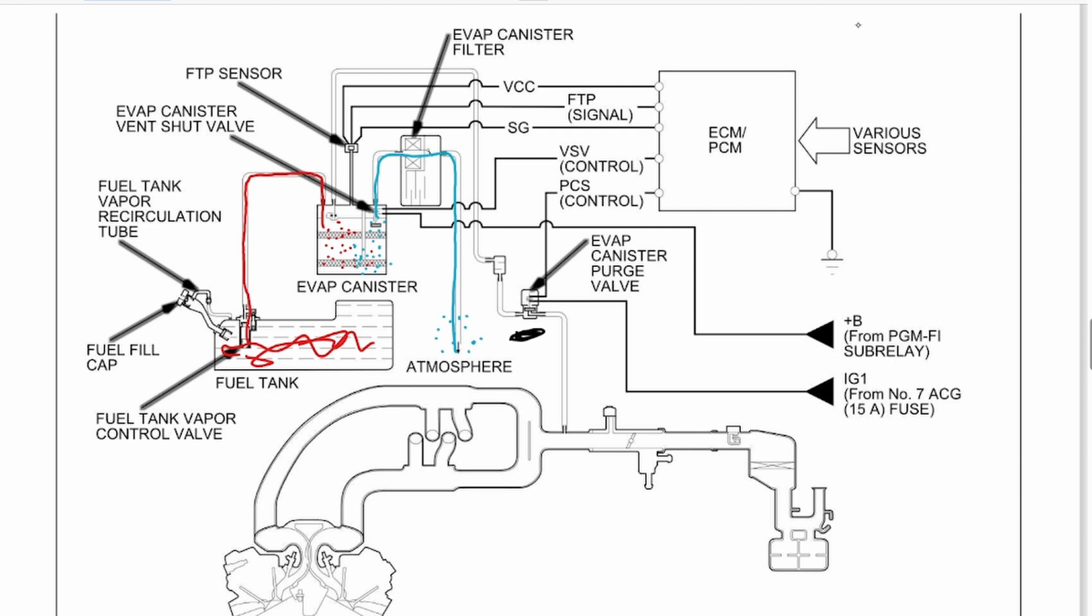Right here is the purge valve. When the purge is open, those hydrocarbons are drawn into the intake manifold, into the engine to be burned up. That intake vacuum also draws fresh air from the vent back into the charcoal canister, cleaning out our whole canister so we can start over.